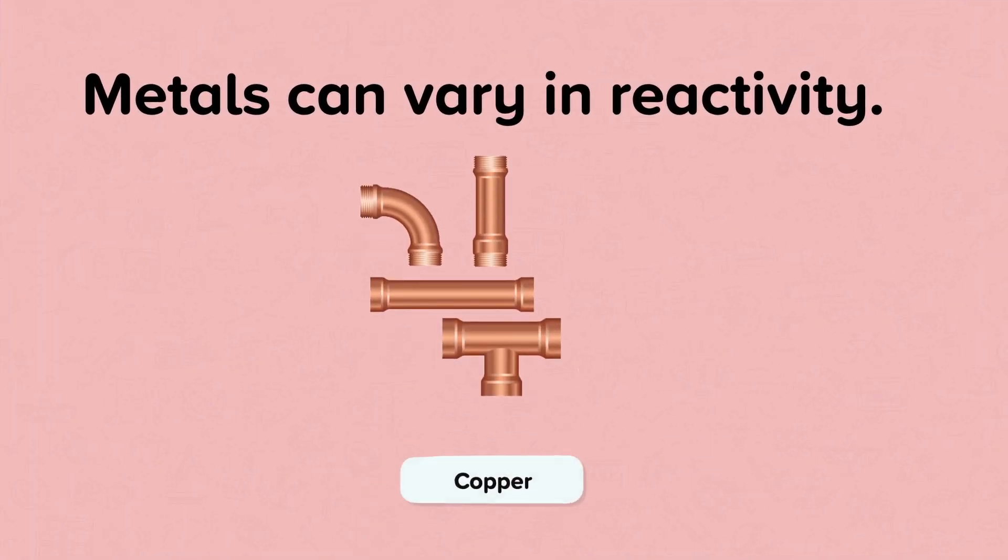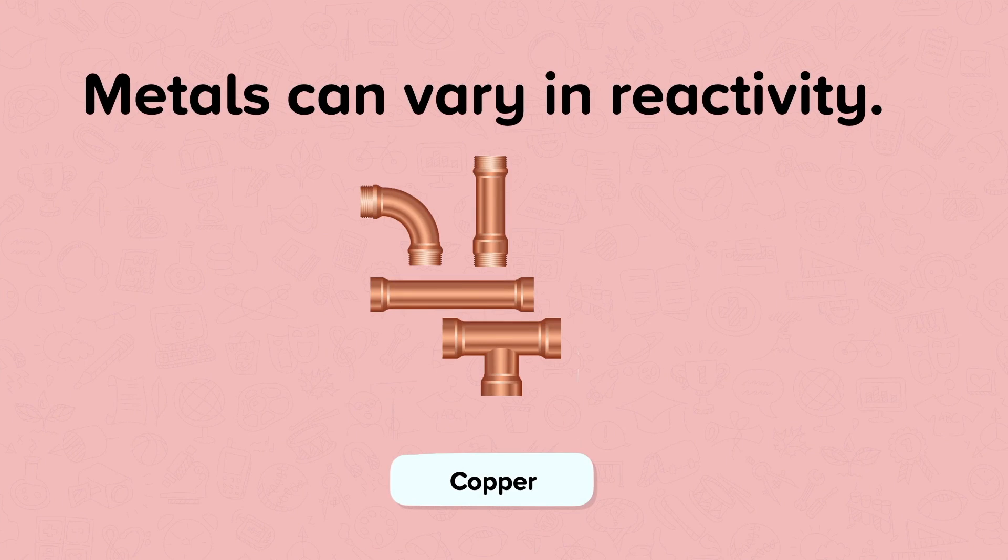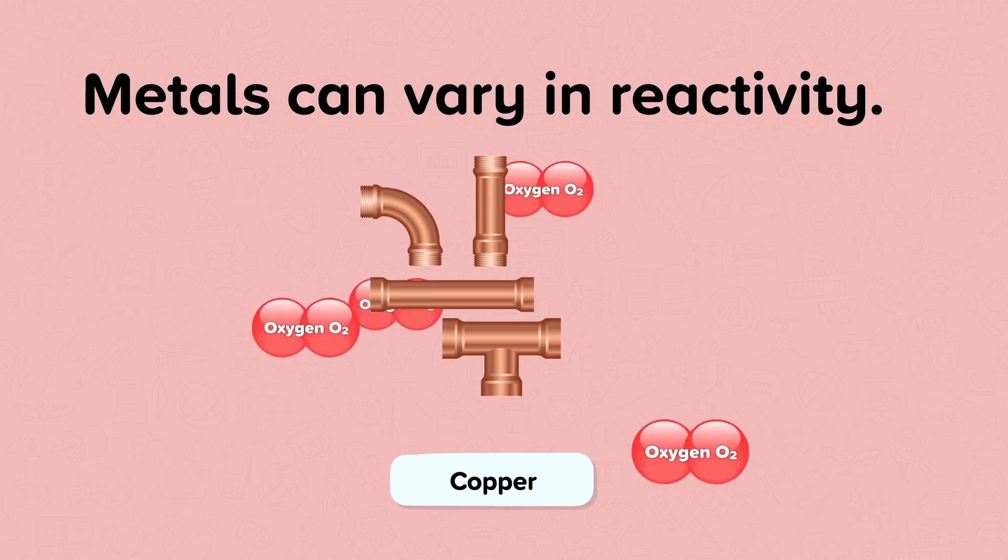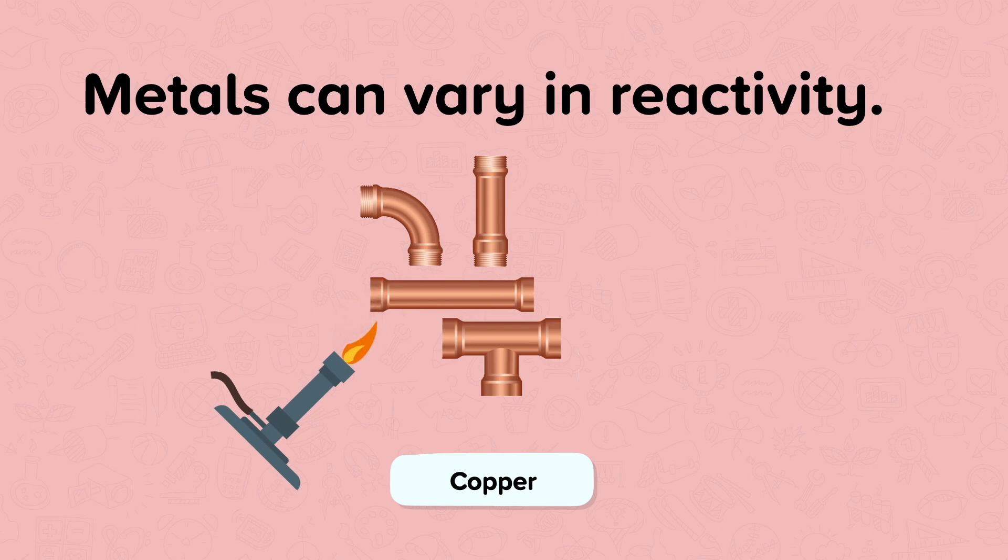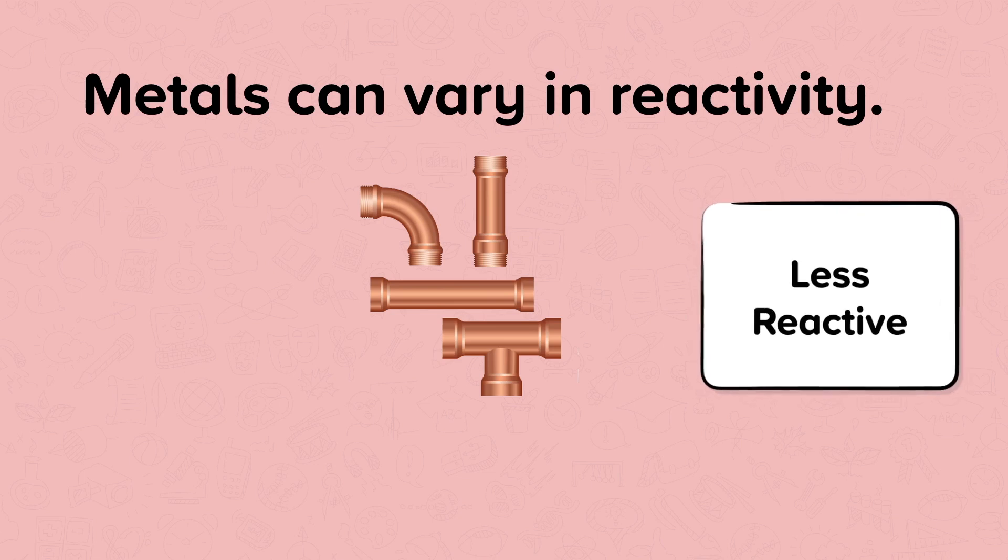Some metals are less reactive. This means they do not easily take part in chemical reactions. For example, copper does not react with oxygen in the air, even if it is heated in a Bunsen burner flame. It also does not react with water. However, we would not describe copper as unreactive because it does react slowly with other substances, for example, acids. So we say copper is less reactive.